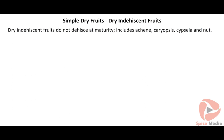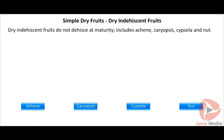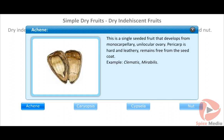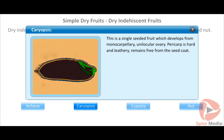Dry indehiscent fruits do not dehisce at maturity. Types include achene, caryopsis, cypsela, and nut. The achene is a single-seeded fruit that develops from a monocarpellary unilocular ovary; the pericarp is hard and leathery and remains free from the seed coat. Example: Clematis, Mirabilis.